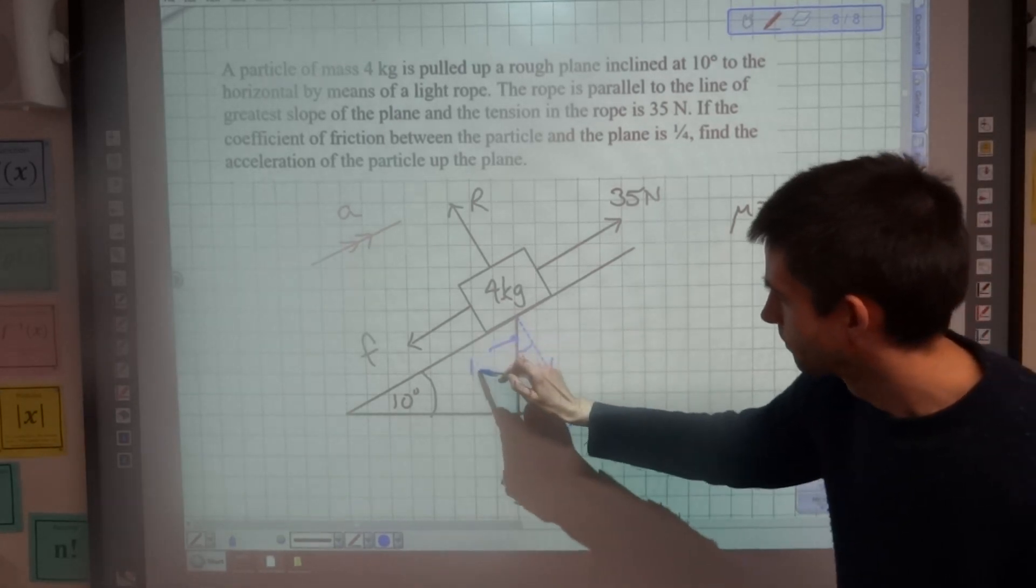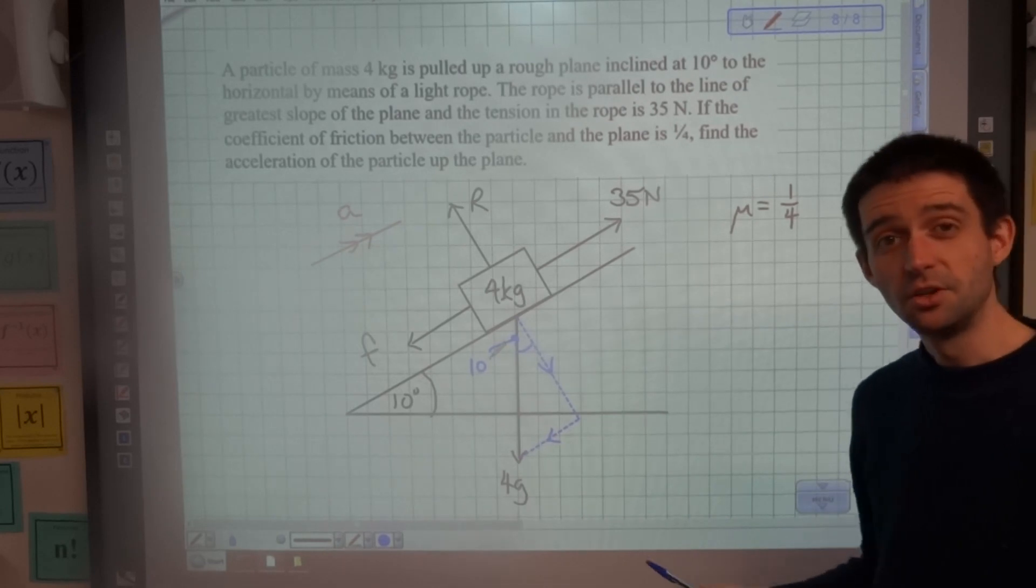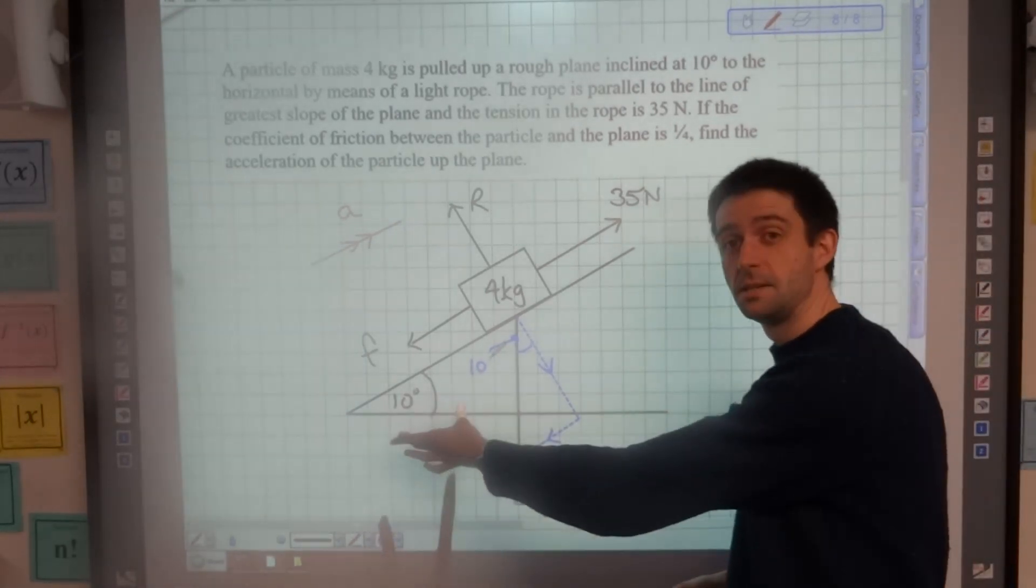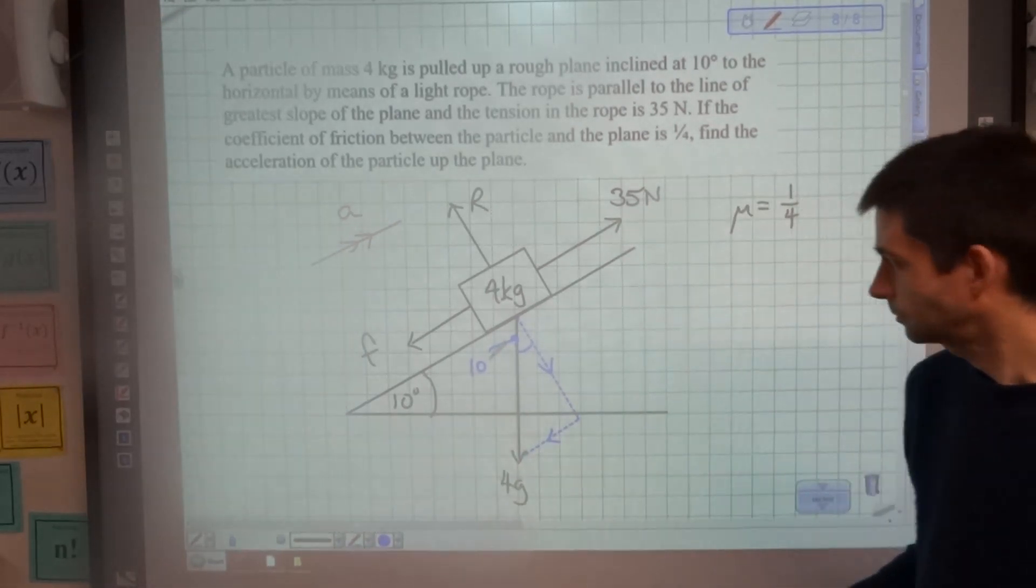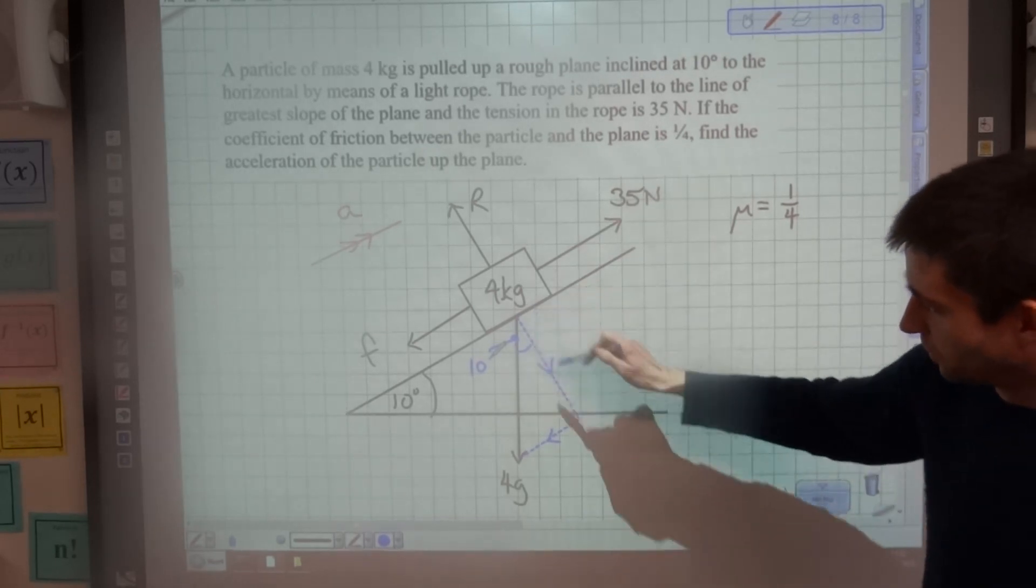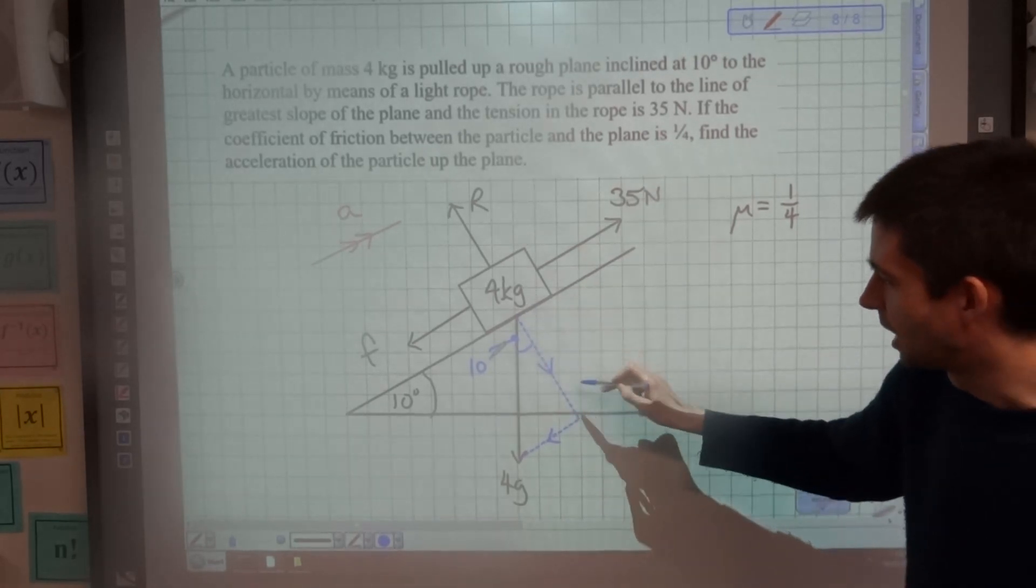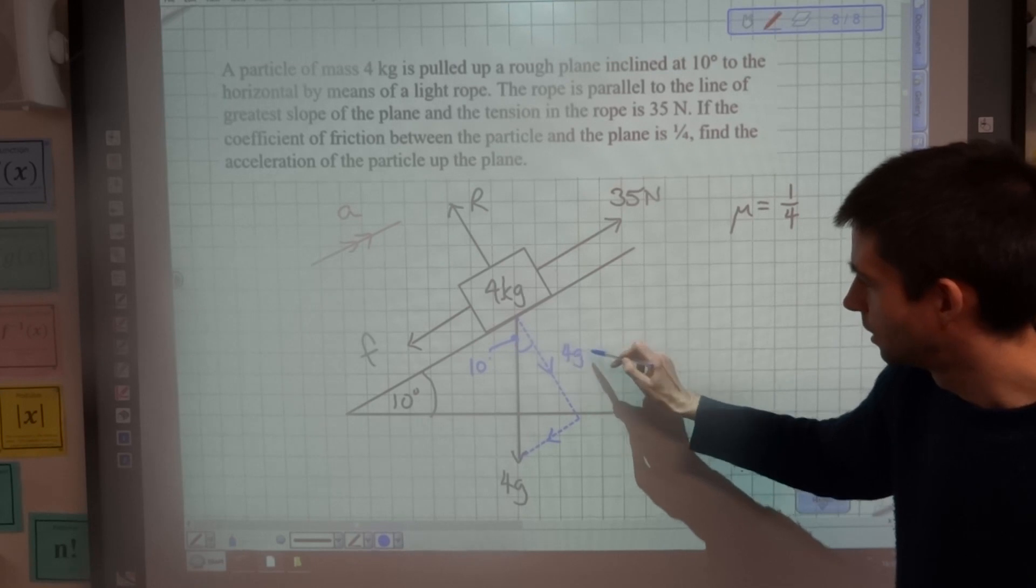That angle in there is going to be 10 degrees. That is the same as the angle of the slope. So resolving this one, the perpendicular component is going to be 4G cos 10, and the parallel component is 4G sin 10.